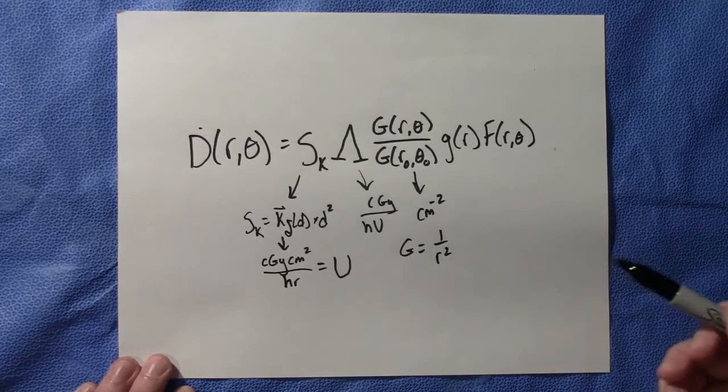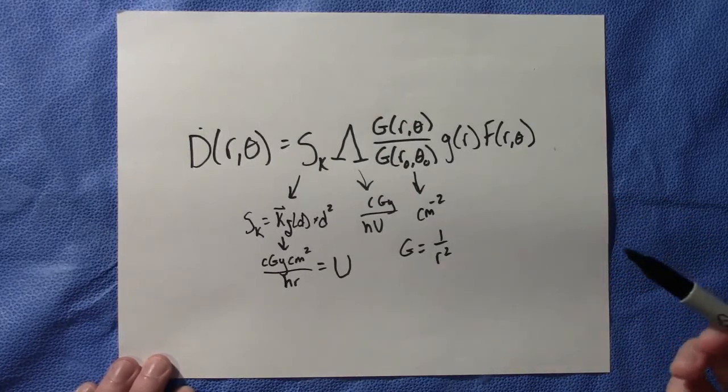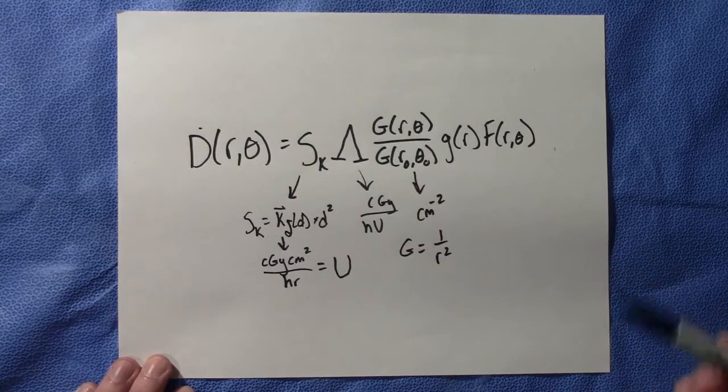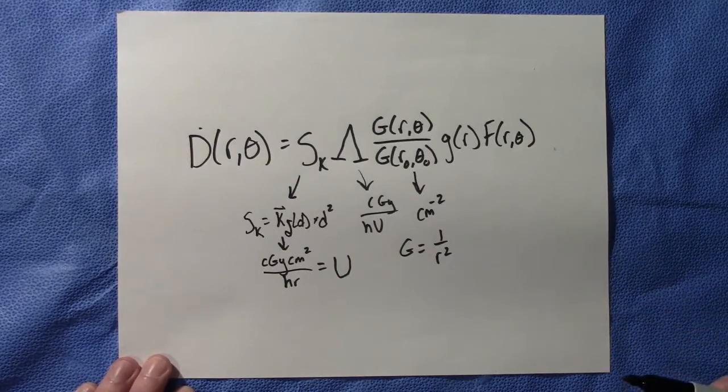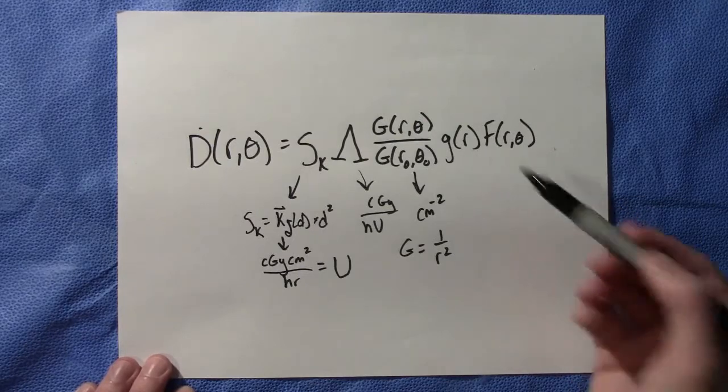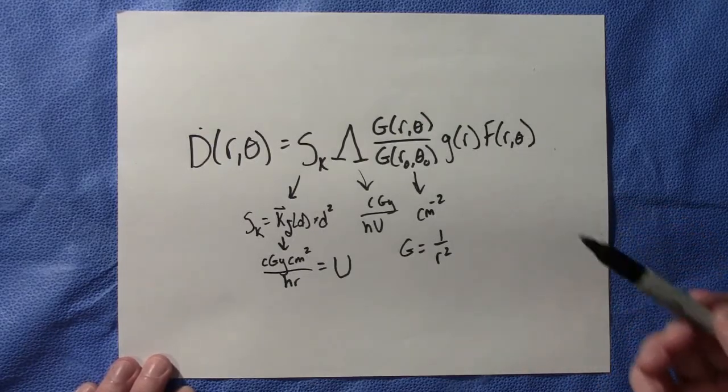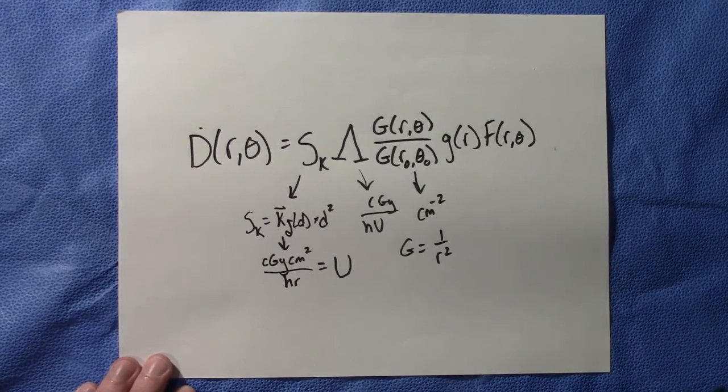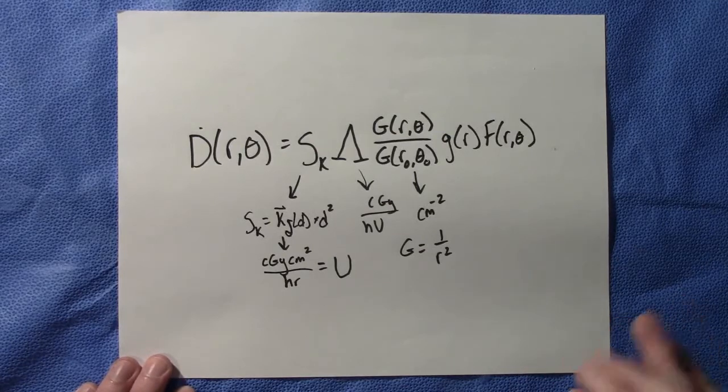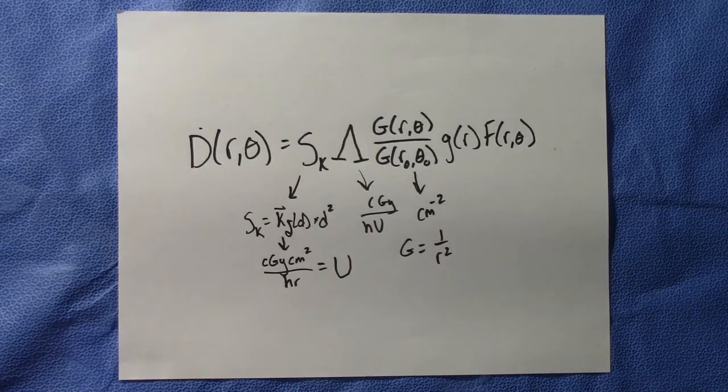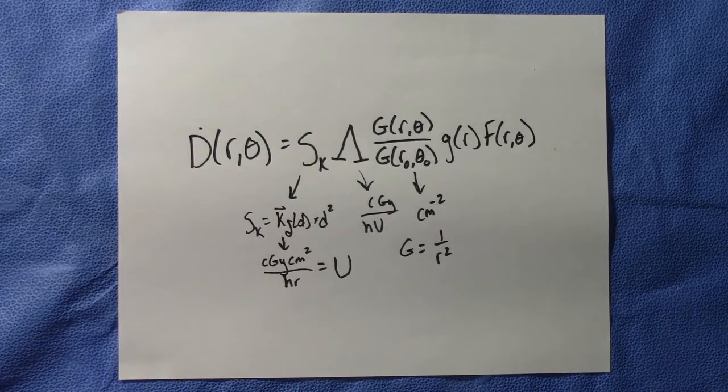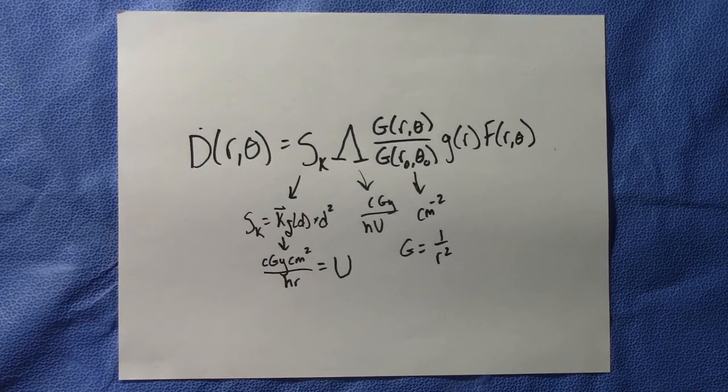Next we have our radial dose function. Now this is the radial dependence of photon absorption and scatter in the medium along the transverse midplane. This is unitless. We also have the anisotropy factor in which this is normalized at pi over 2 at the transverse midplane. It accounts for the angular dependence of photon absorption and scatter in the encapsulation.